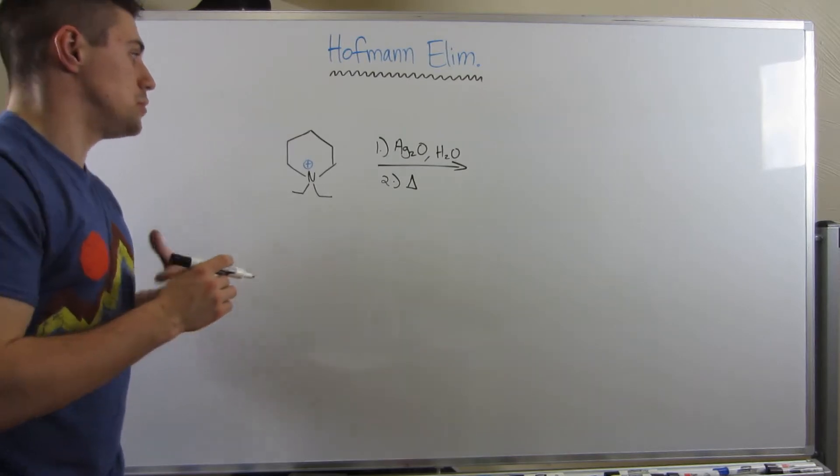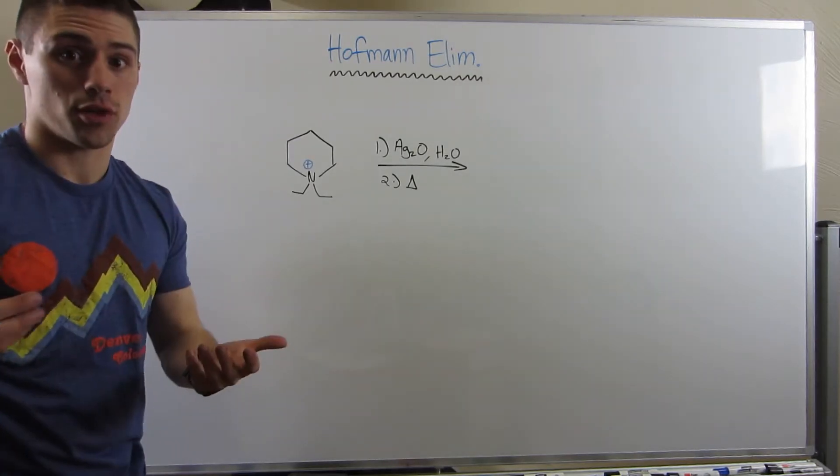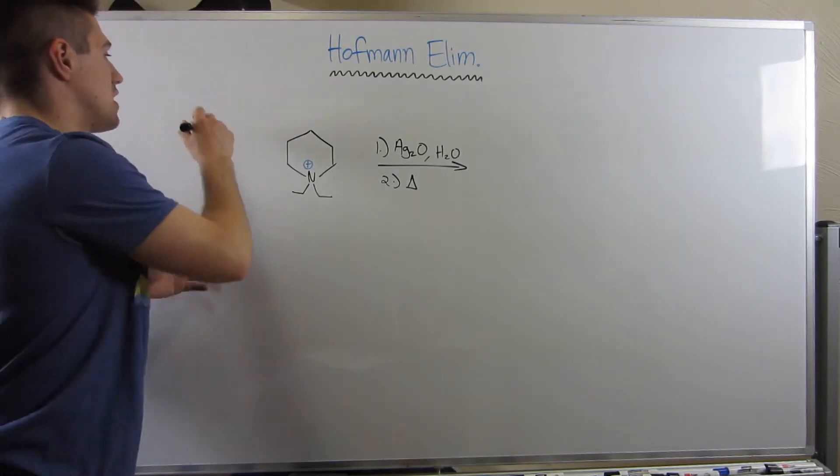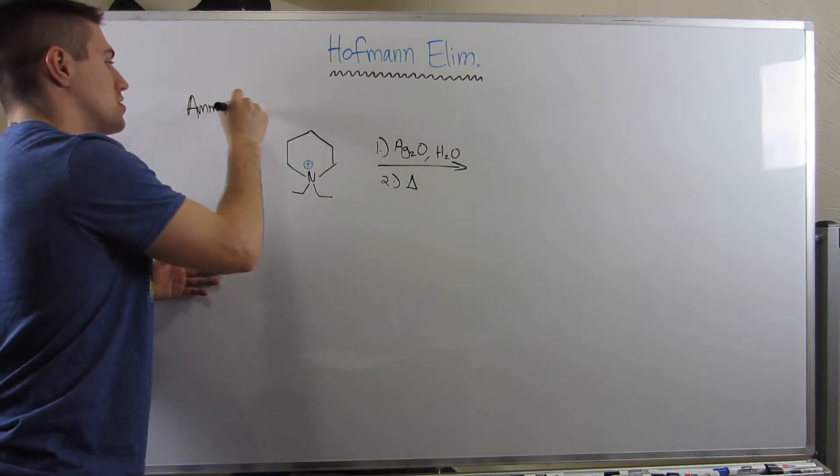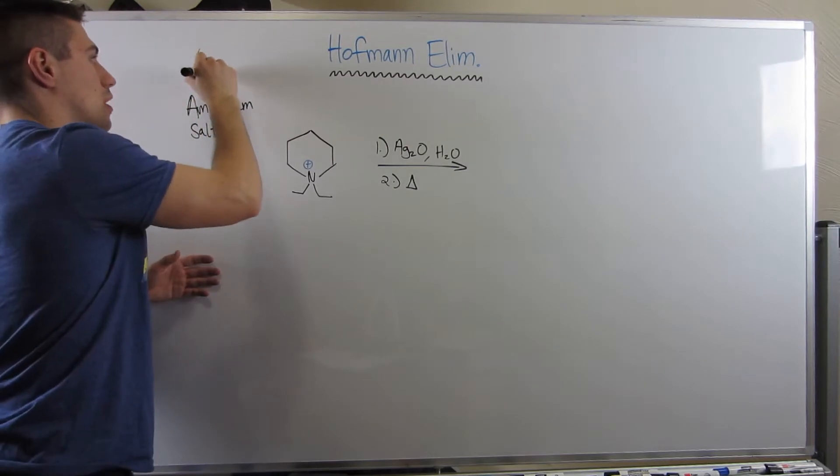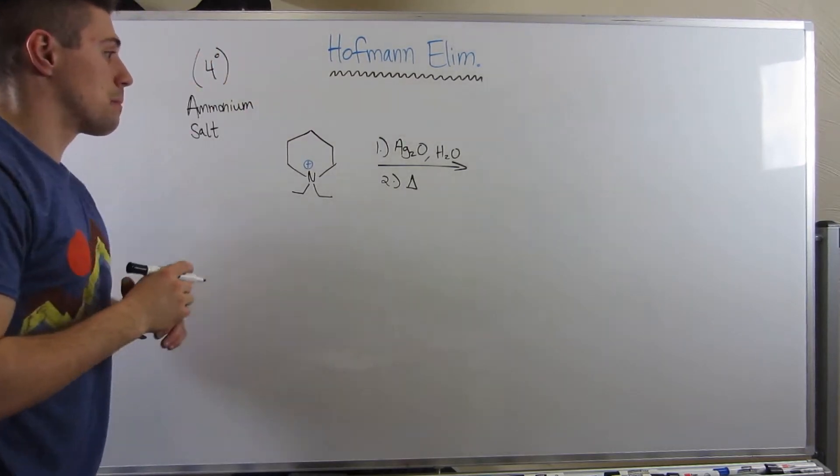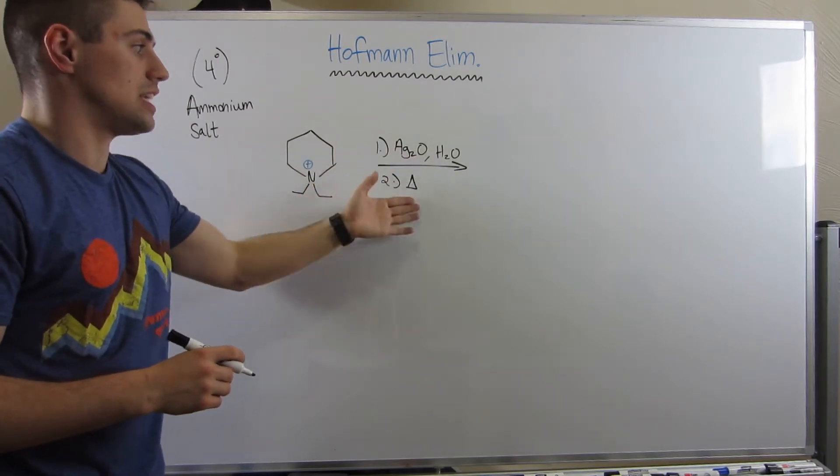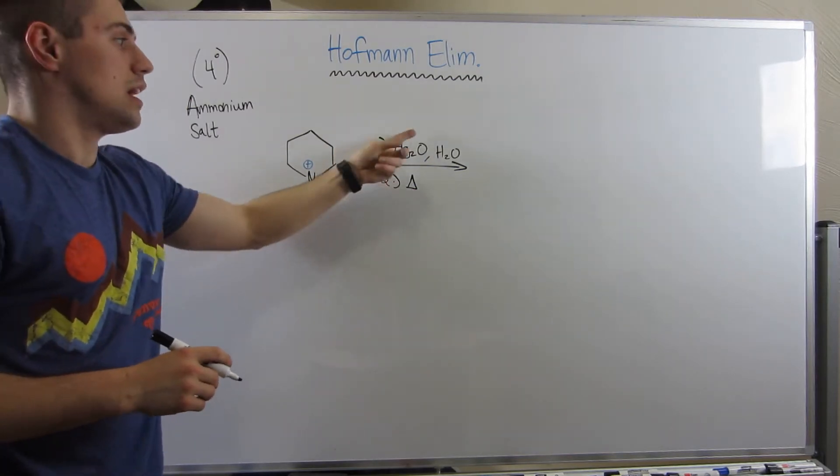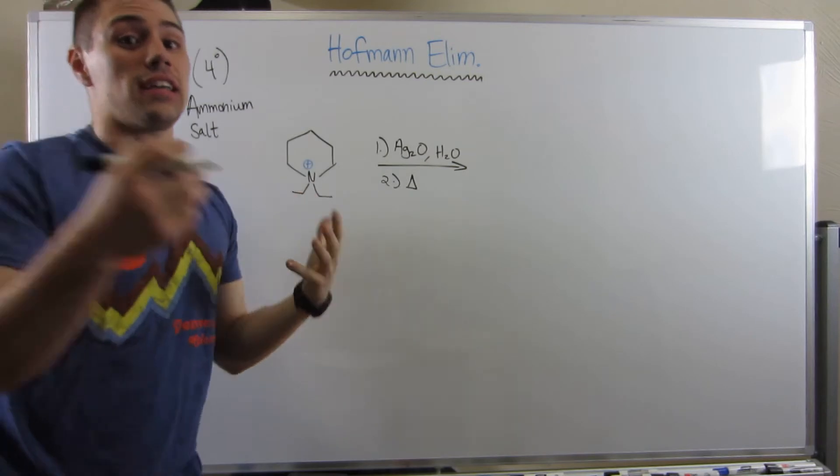Okay. So, you can see we already have an amine with a positive charge. And, in fact, we would say this would be part of an ammonium salt. This is the ammonium part because we have a quaternary amine. Let's say we have this Ag2O, water, and heat. Heat favors elimination, and these are the reagents that's going to help us get there.